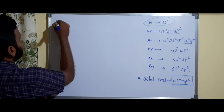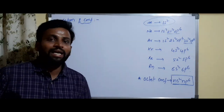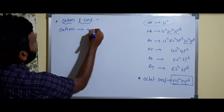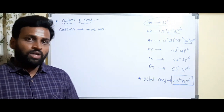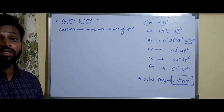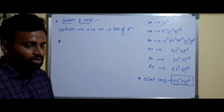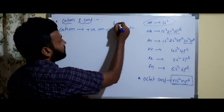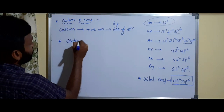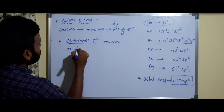Now let's see cation electronic configuration. Cation means a positive ion. How does a cation form? Cations form by the loss of electrons. Now, which electron do we have to remove? To form a cation, we remove the outermost electron. The outermost electron means the electron in the highest n-value shell — not necessarily the highest energy.